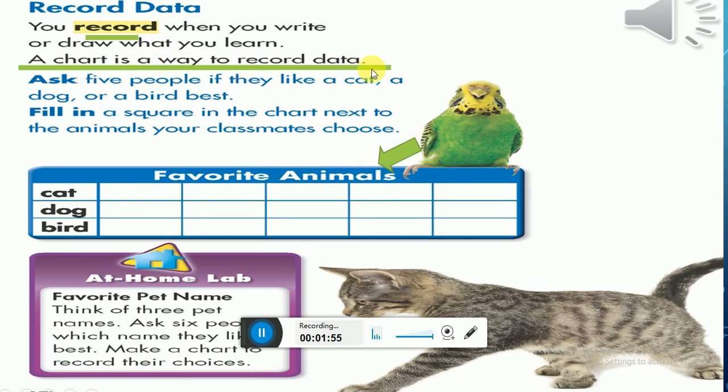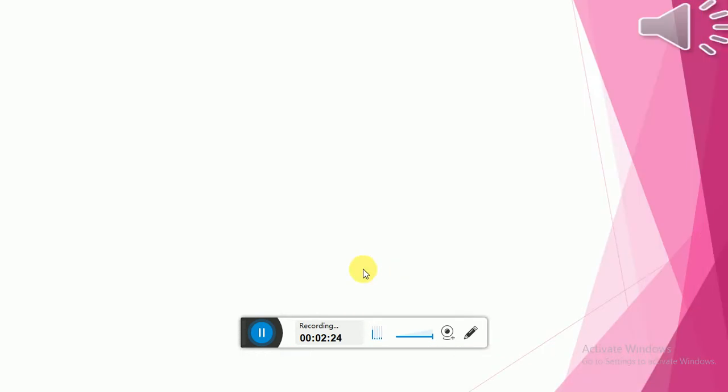I can find right here some numbers. Maybe I love cat, or I love birds. Some of you love cat, another one loves dog, cat, bird, and so on. We can fill or record data in this chart. We use a chart to record data.